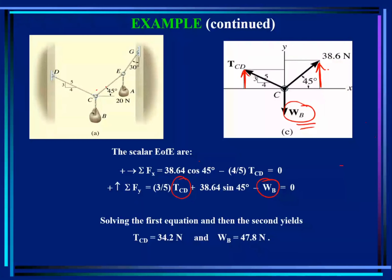There's no need to do analysis on point D because we already know the tension CD. We now know the weight of sag B as well. All the unknown values have been calculated.